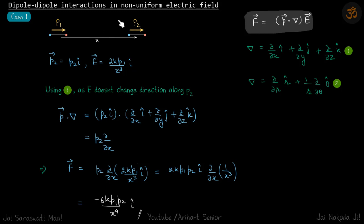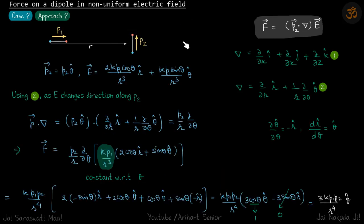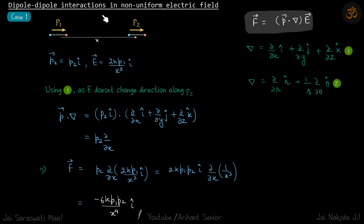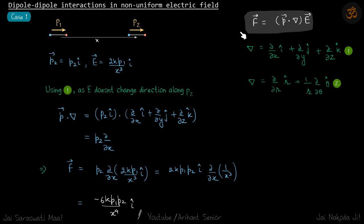These are the general cases for dipole-dipole interactions in a non-uniform electric field. As a hint: if one dipole is at a random angle at some position, just remember these three results — axial dipoles, perpendicular dipoles, and parallel dipoles. You can break the dipole into perpendicular and parallel components, and similarly break the other dipole. You'll have four forces between them, all of these three forms, so you can calculate the force on a general dipole.